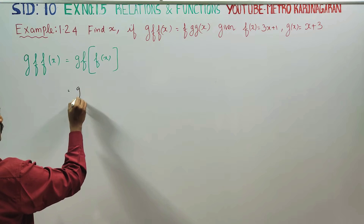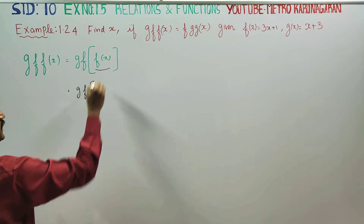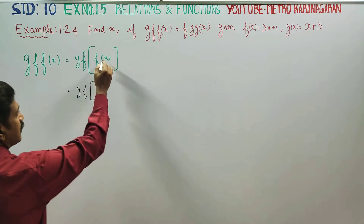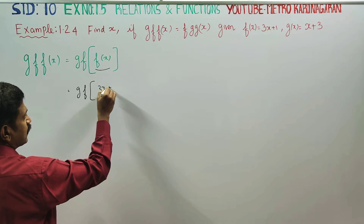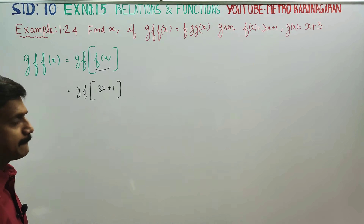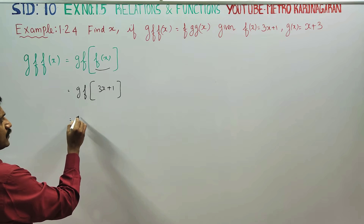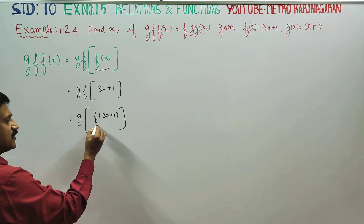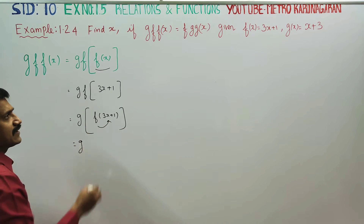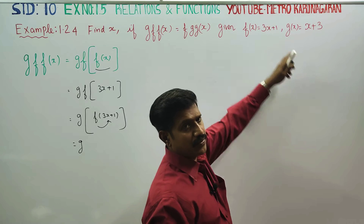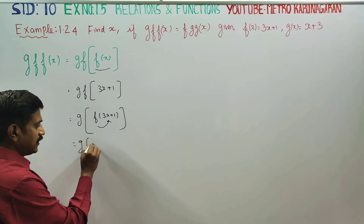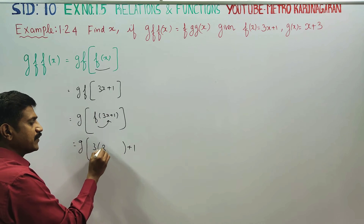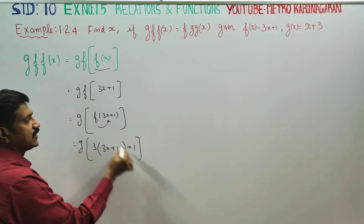Then g(f(x)) is equal to f(x). This is the value of x. That rate of x is equal to f, so that we can find f(x). This is the value of x plus x; however, we can find where x is equal to f.